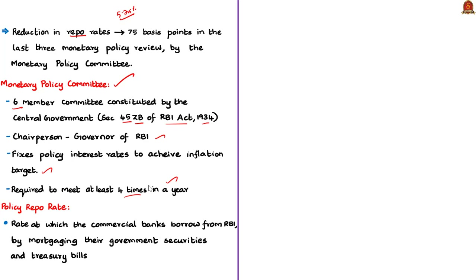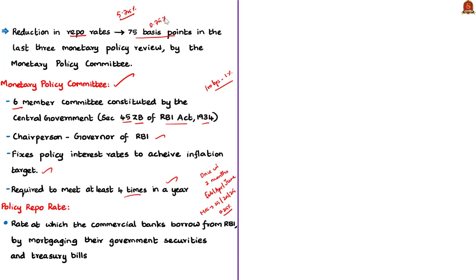The MPC usually meets once every two months to review policy rates. In February, April, and June 2019, the MPC cut the policy repo rate by 25 basis points each time — that is 0.25% — totalling 75 basis points or 0.75% in cuts. Despite these cuts, the Indian economy has failed to grow, and it is expected that the MPC will again reduce the repo rate in August.